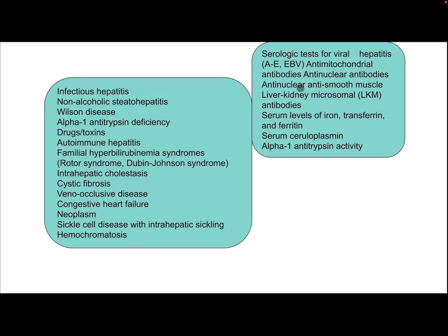If laboratory studies are not suggestive of biliary obstruction, consider serological tests for viral hepatitis A through E, Epstein-Barr virus, anti-mitochondrial antibodies, anti-nuclear antibodies, anti-smooth muscle antibody, liver-kidney microsomal antibody, serum iron, transferrin, ferritin, serum ceruloplasmin, and alpha-1 antitrypsin activity. Differential diagnosis may include infectious hepatitis, non-alcoholic steatohepatitis, Wilson disease, and alpha-1 antitrypsin deficiency.